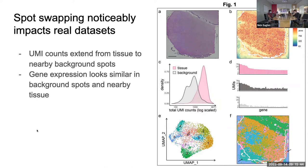They also have different ways to depict this effect, like in density plots. Concerningly, the gray density plot here — we shouldn't have any expression ideally, or any counts, in the background. So that's already a concern, and we have some overlap between tissue and background.